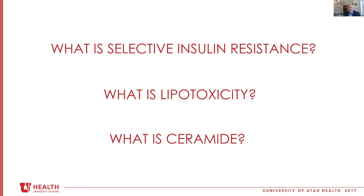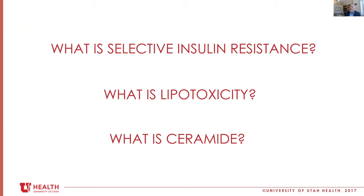I'm going to try and give you an alternative view of how diabetes and metabolic disease happens, and it centers on these three terms. The first one is selective insulin resistance — the key is the word 'selective.' The second is the concept of lipotoxicity. And the third is ceramide. Has anybody heard of any of those terms? Angie has — congratulations. So selective insulin resistance is where we're going to start.